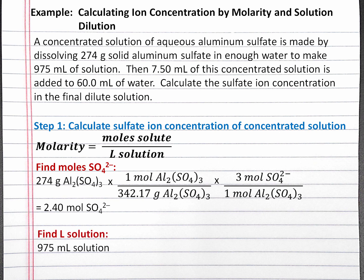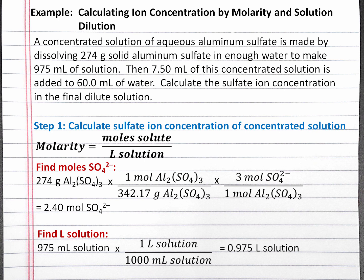Next, we'll calculate our liters of solution. We're told that we add enough water to make 975 milliliters of solution, and we can convert this into liters of solution using dimensional analysis, and we'll get 0.975 liters of solution.